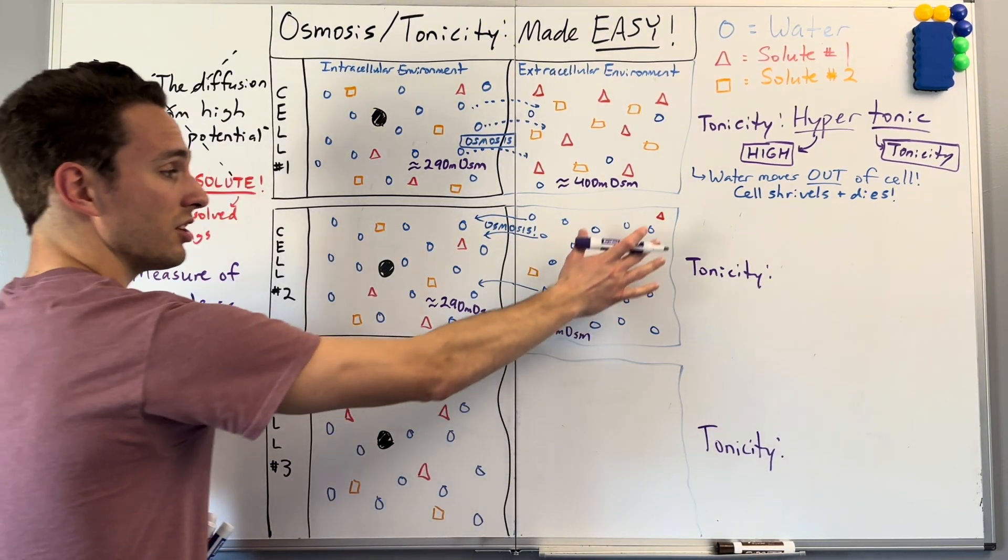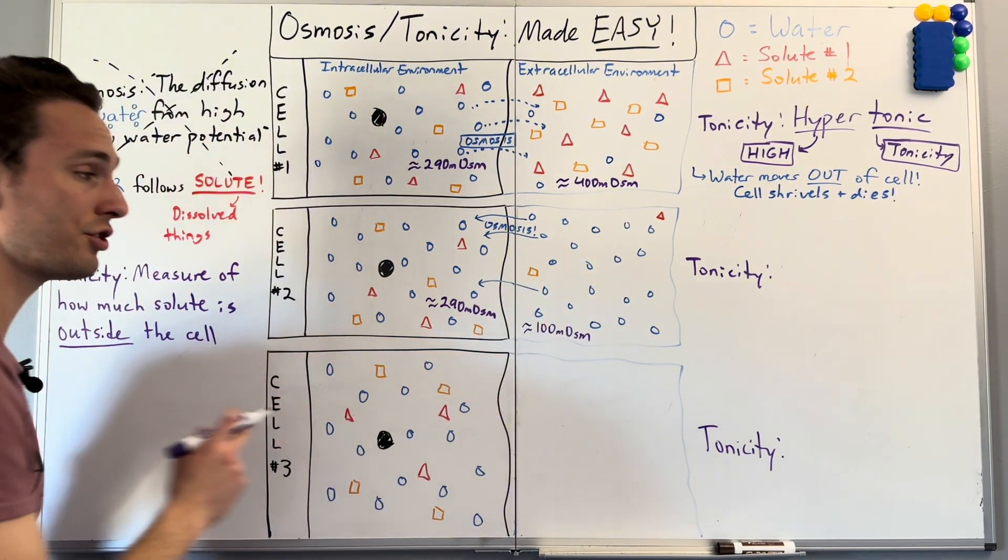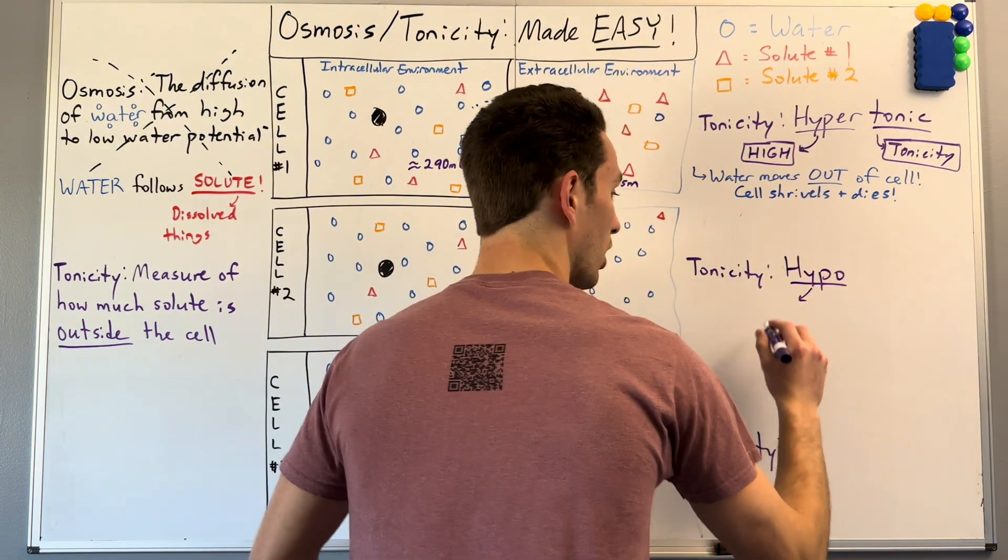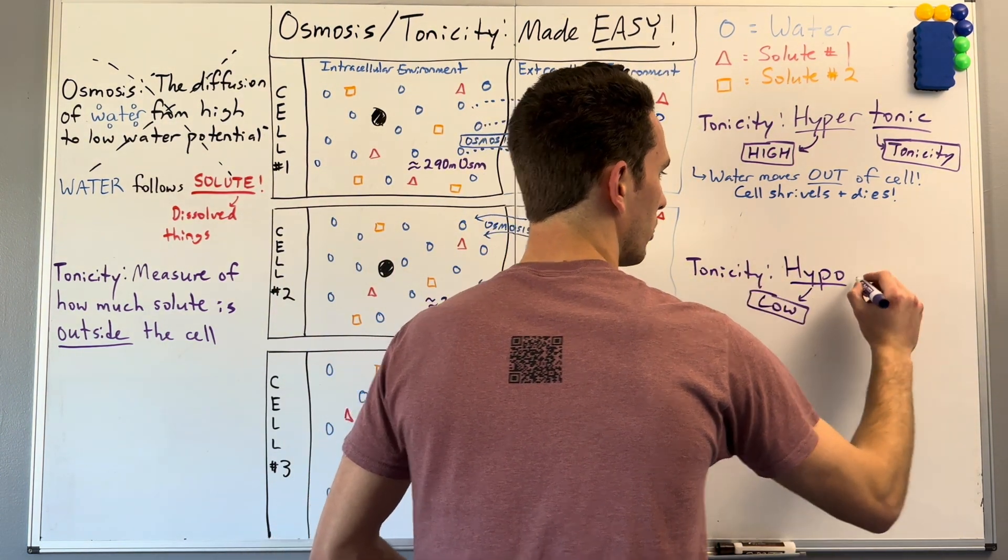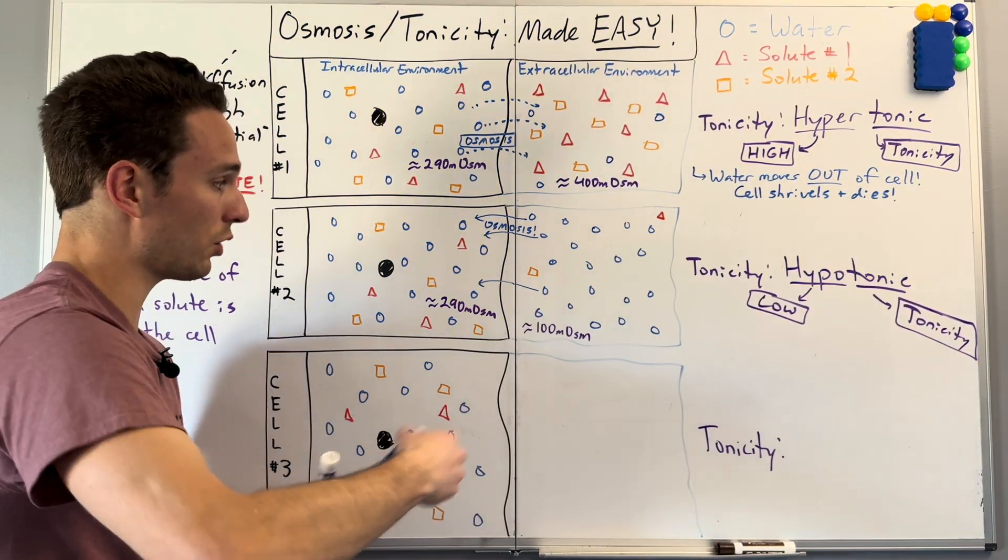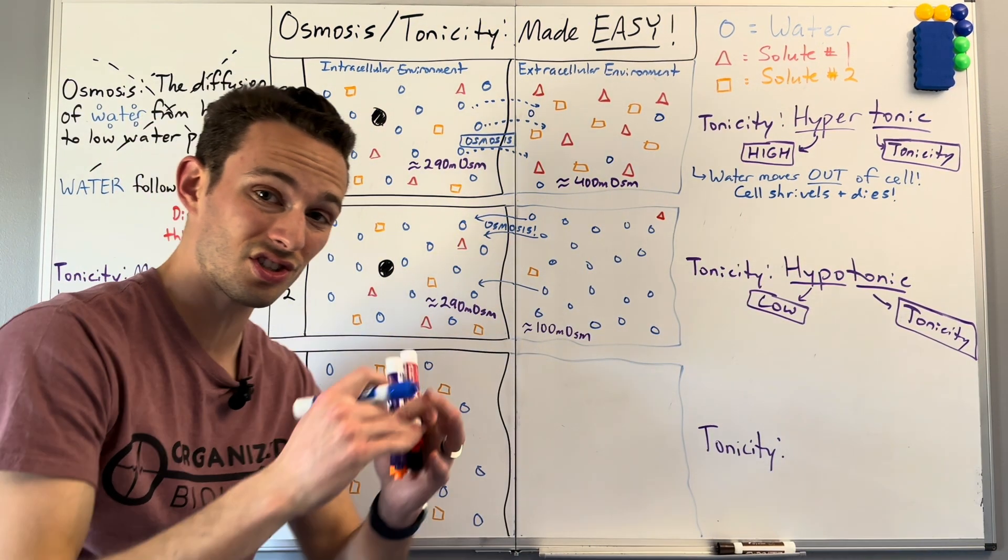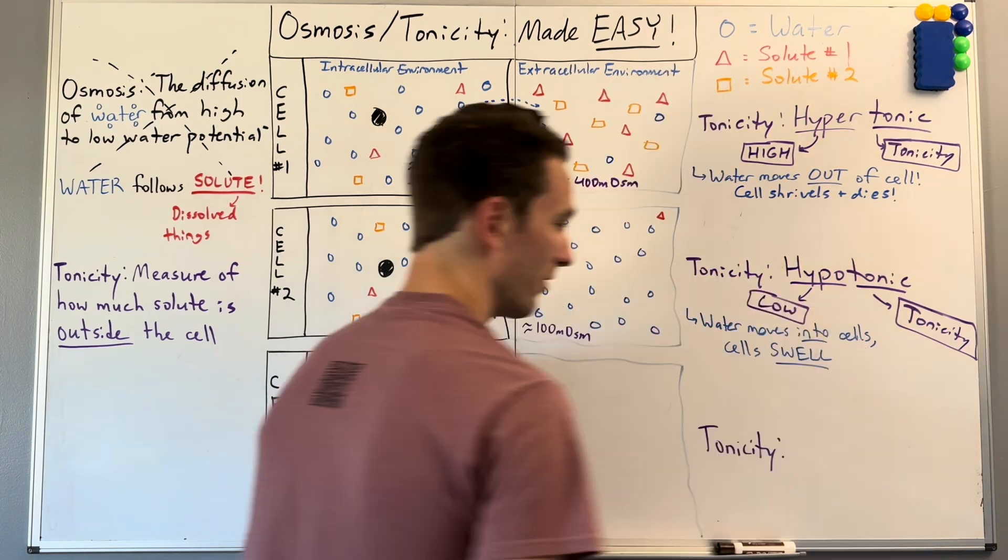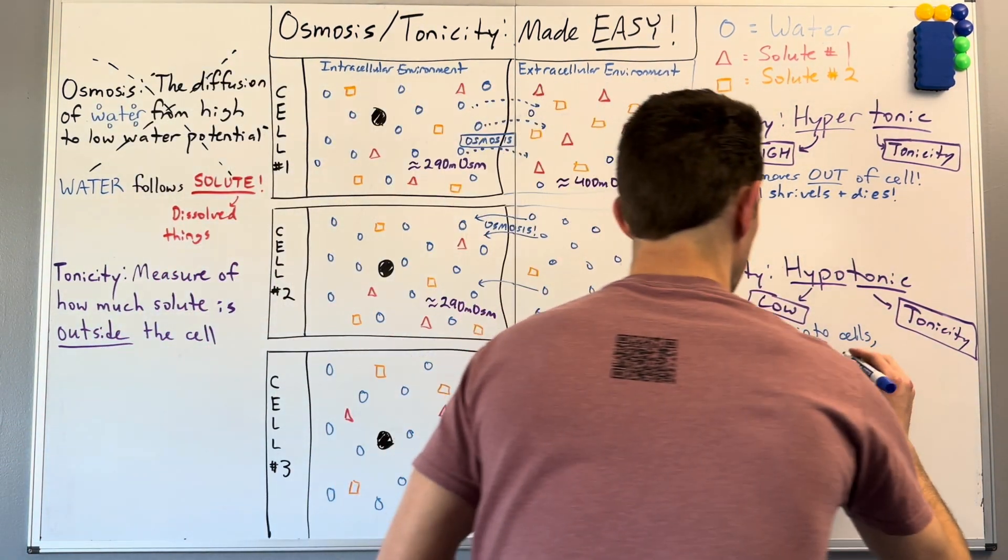As you can see, water will want to move towards the higher solute area. So it's going to move this direction. And because there's less solute outside, the tonicity then would be called hypo, meaning low, hypotonic. And since we're having water move into the cells, the cells will begin to swell. Oftentimes they actually burst.